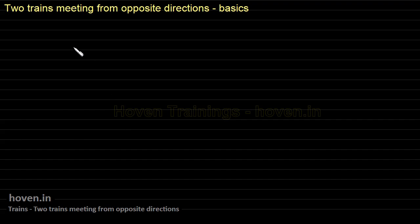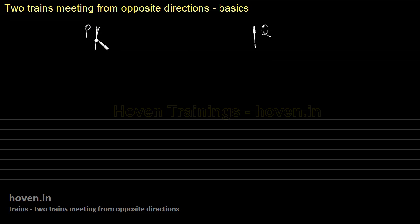We will discuss the case of two trains meeting each other from opposite directions — this is quite a common case in these questions. Let us suppose there is one point P and another point Q. One train is travelling from P towards the right, and a second train is travelling from Q towards the left. The speed of the first train is V meters per second and the speed of the second is U meters per second.